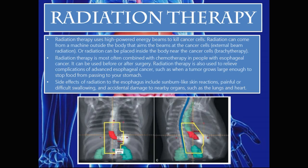Radiation therapy uses high-powered energy beams to kill cancer cells. Radiation can come from a machine outside the body aimed at the cancer cells — called external beam radiation — or it can be placed inside the body near the cancer cells, called brachytherapy. Radiation therapy is most often combined with chemotherapy in people with esophageal cancer and can be used before or after surgery. It is also used to relieve complications such as esophageal obstruction. Side effects of radiation to the esophagus include sunburn-like skin reactions, painful or difficult swallowing (dysphagia), and accidental damage to nearby organs such as the lungs and heart.